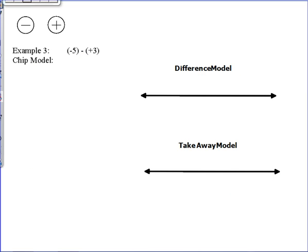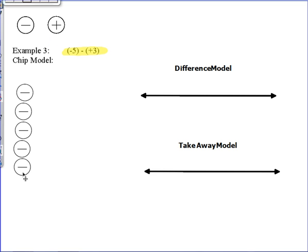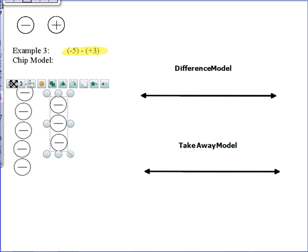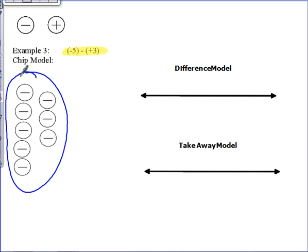Two more examples. Example three: negative five minus positive three. This time we're taking a positive integer away from a negative integer. We start out with five negative chips. We need to take away three positives, but all we have are five negatives. We borrow zero pairs to get the positive chips we need to take away. We can then remove those three positives off the board, and our remaining value is negative eight.